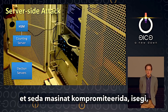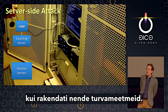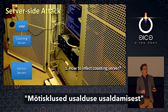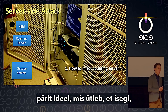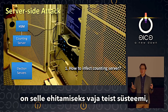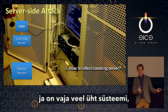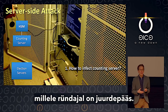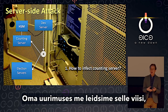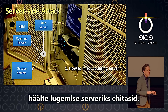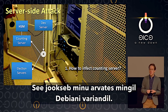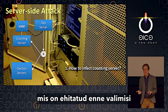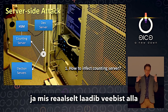We experimented with and actually built a toolchain to compromise that machine even with their security procedures in place. Our toolchain draws on the idea from Ken Thompson's Reflections on Trusting Trust, which says that even if one system is secure, you needed some other system to build it, and some other system to build that one — so if you follow that chain, eventually you'll come to some place the attacker has access to. We found out that the counting server runs a Debian variant installed from a DVD, and that DVD is burned in a separate development machine that downloads a fresh copy of Debian from the web.